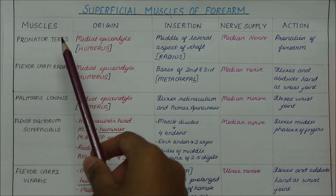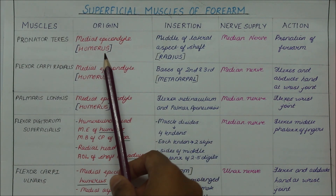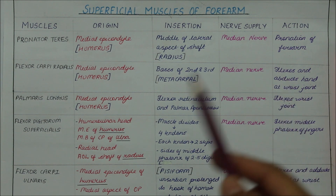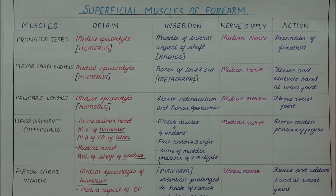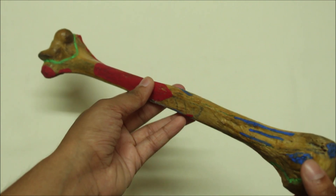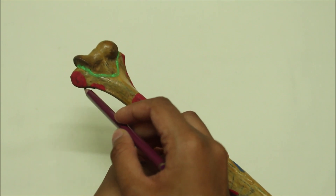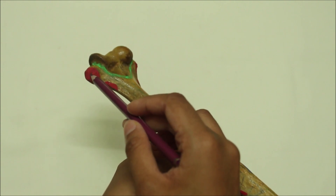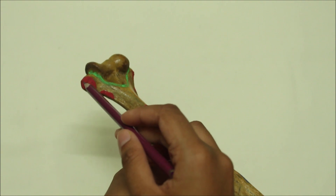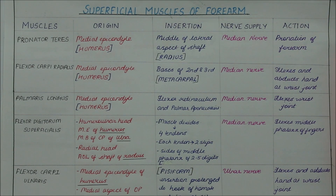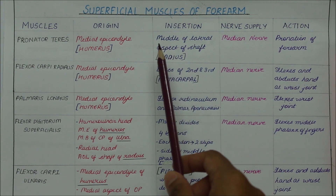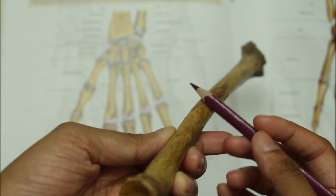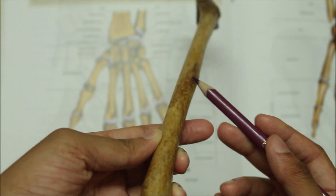First let's look at the pronator teres. It originates from the medial epicondyle of the humerus. We can note that all the flexors of the forearm on the anterior aspect originate from the medial epicondyle of the humerus. The pronator teres inserts into the middle of the lateral aspect of the shaft of the radius, right here.